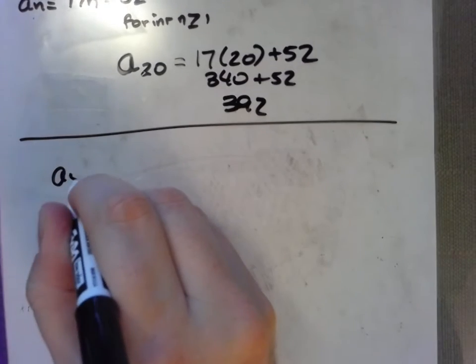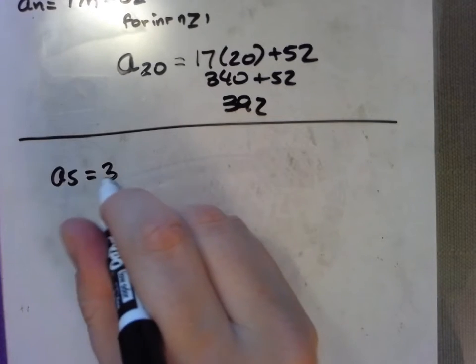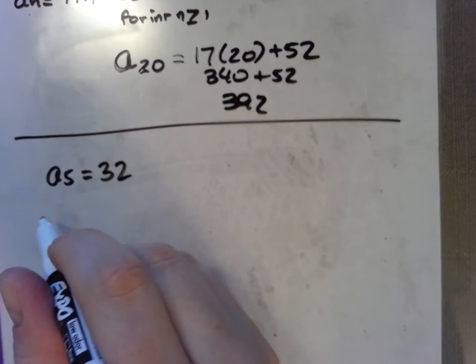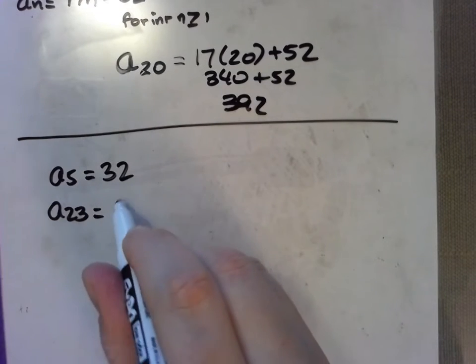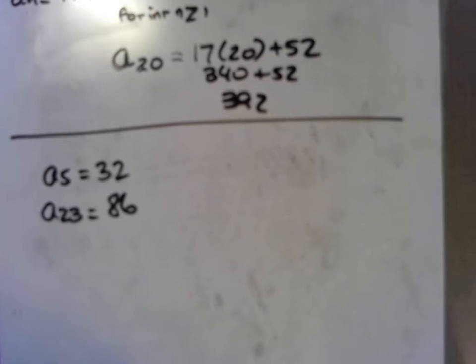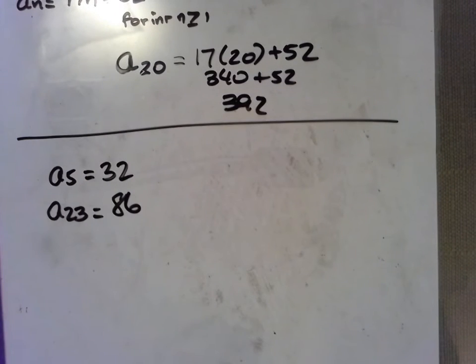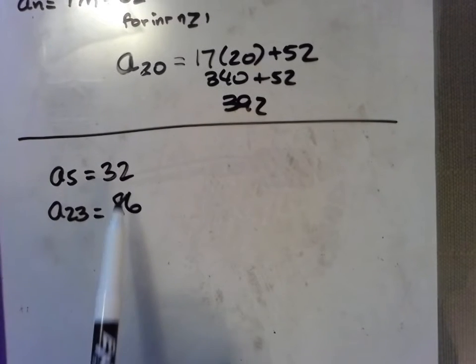Let's say we knew two specific terms. Let's say we knew the value of our fifth term in an arithmetic sequence was 32, and the value of our 23rd term was 86. So how would we find an explicit formula for this? Now we do realize that there's a constant increase or decrease happening. To get from the fifth term to the 23rd term, we know that the values are increasing, so our difference should be positive.